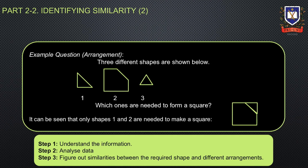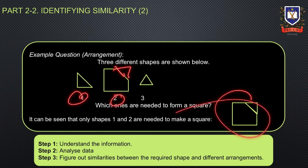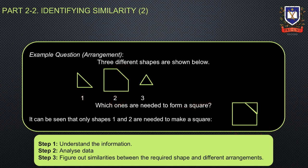As we continue to problem-solve and figure out which arrangements match, we understand that shapes one and two, when tessellated, can be formed into a square as shown.